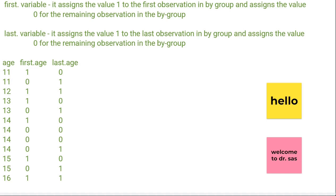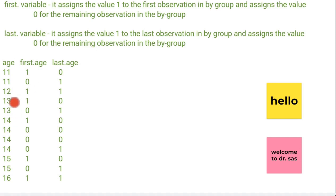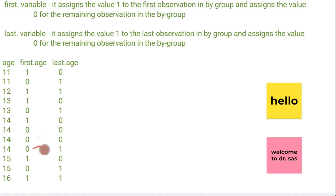Let's say age 11 is occurring for the first time — first.variable will assign value 1. Now 11 is occurring again once more, so it will give 0 for that. When it is occurring first time it gives 1, and for the remaining observations it gives 0. For 12, it is occurring only once, so it will give 1. Now 13 is occurring twice, so first.variable gives 1 for its first occurrence and 0 for the remaining. 14 is occurring 4 times — first.variable assigns 1 for the first value, and 0 for all remaining values. Same way it goes on.